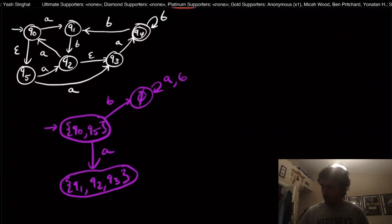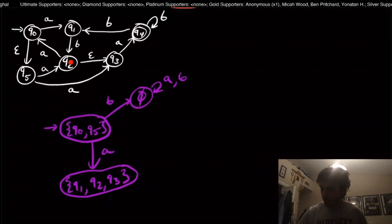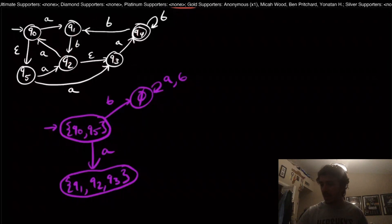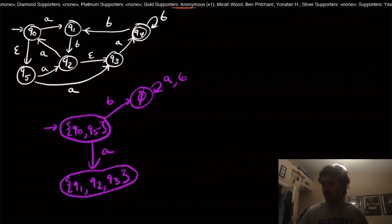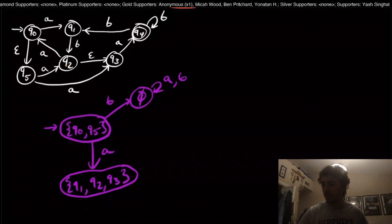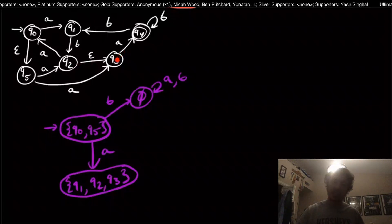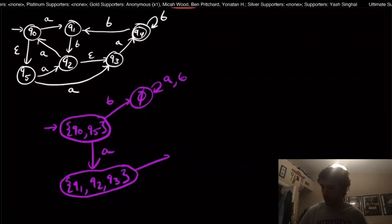Where can we go on input B from {q1, q2, q3}? The only state with a B transition is q1, which goes down to q2, but q2 has an epsilon transition to q3. q2 and q3 don't go anywhere on B. So on input B, this state goes to {q2, q3}.